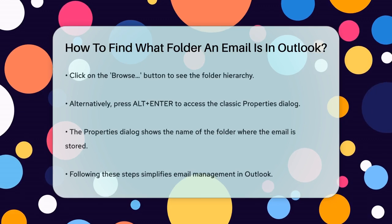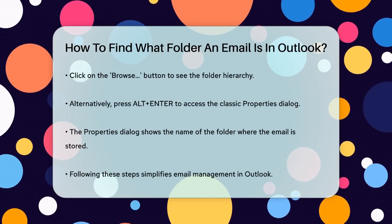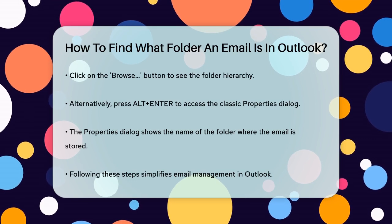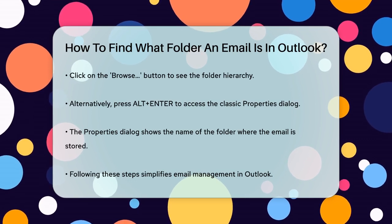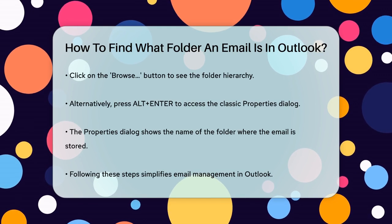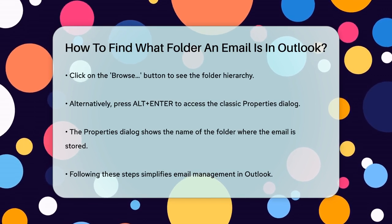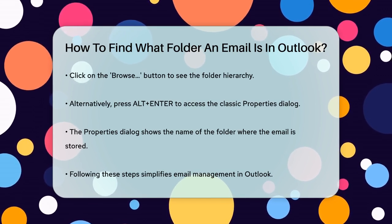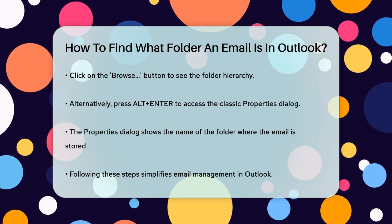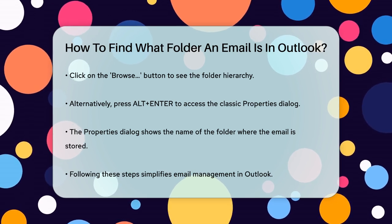Another method, though a bit more old school, involves using the Classic Properties dialog. Open the email and press Alt+Enter to open the Classic Properties dialog. This will give you the name of the folder where the email is located. By following these steps, you can easily determine which folder an email is stored in, making your email management a whole lot easier.